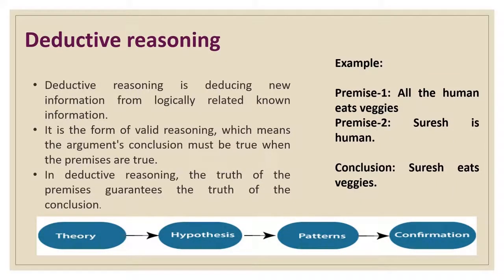Deductive reasoning derives new information from logically related information. It is a form of valid reasoning, which means the arguments may be concluded with a true value. This deductive reasoning is a type of propositional logic in artificial intelligence and it requires various rules and facts. It is sometimes referred to as top-down reasoning, contrasting with inductive reasoning. The truth of the premises is guaranteed to support the conclusion. Deductive reasoning will mostly start from general premises to a specific conclusion.